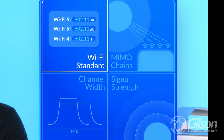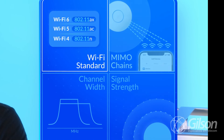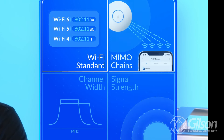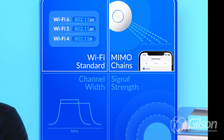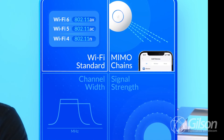A gente tem o Wi-Fi 4, o Wi-Fi 5, o Wi-Fi 6 — ou seja, N, AC e AX são os padrões. Isso vai impactar diretamente na velocidade.